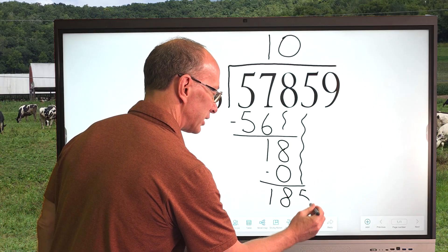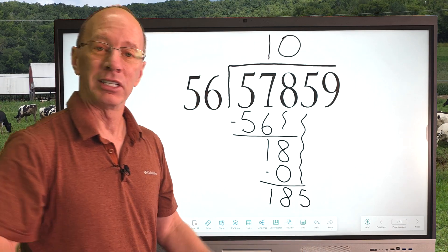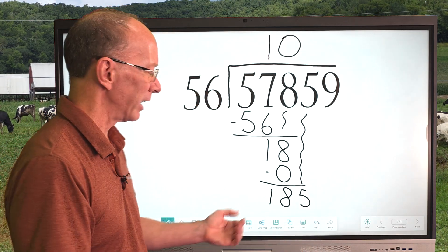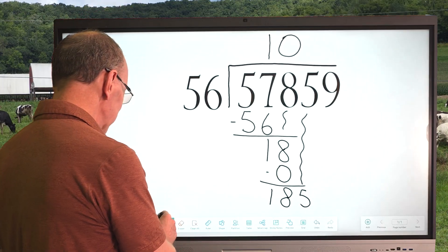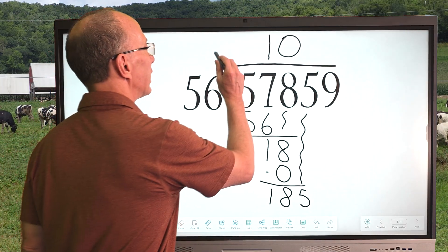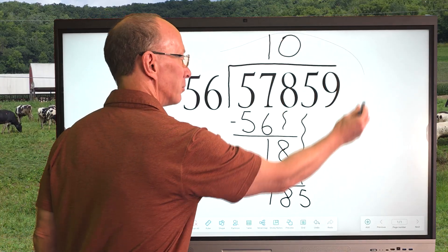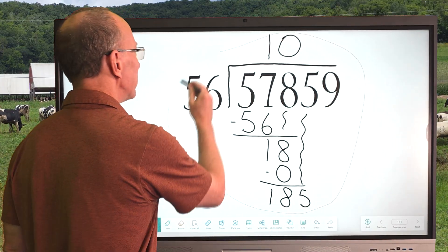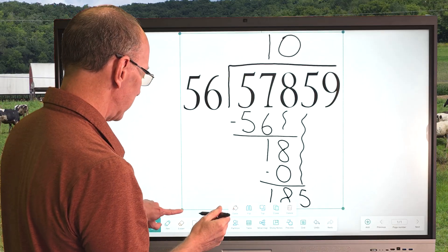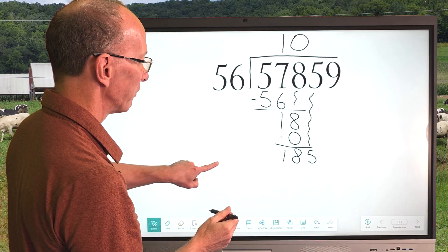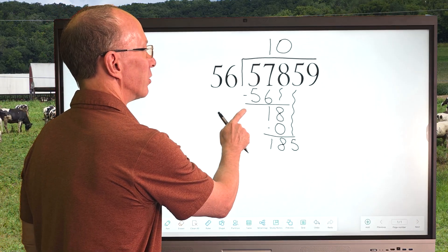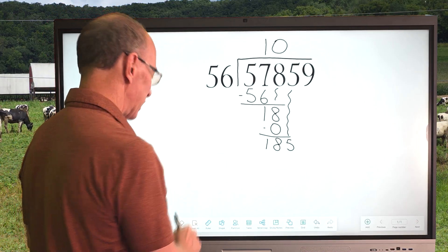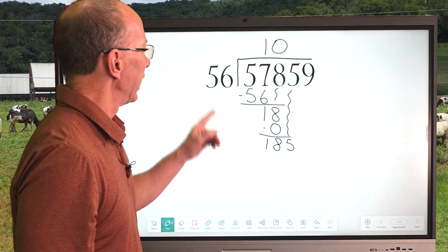So now I subtract. 18 minus zero is 18. And now you bring down the next number which is a five. Got to add those little sound effects to make it cool. And then we just start the whole process over. You're like, oh how can you do it? I gotta make this number a little smaller, don't I? So that's the cool thing about working on a whiteboard, you can kind of manipulate the numbers a little bit. So we're going to size that down a little bit so we have room to work with it.